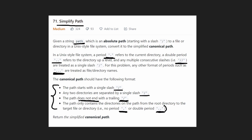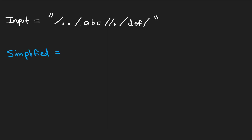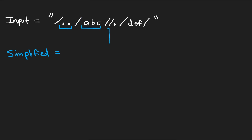Let's say this was our input string. We have the root slash, then a dot-dot, then another file named ABC, then a double slash — you can see it here. In between that we have another file which is the current directory — just a dot. And last, you have another file or directory, and then it ends with a slash. So we want to reduce this.